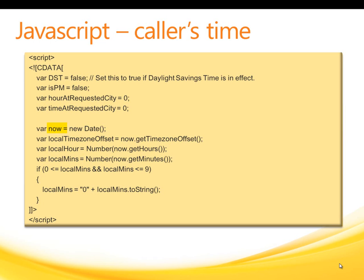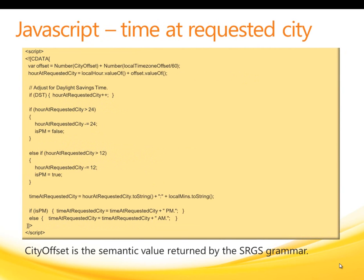The now variable is a date object that contains the date and time on the caller's computer. After the now variable is set, the next several lines of code separate out the local time zone offset, as well as the hour and minutes portion of the time. One thing to keep in mind is that the JavaScript getTimezoneOffset method returns the offset in minutes. The purpose of the second section of JavaScript code is to set a value for the time-at-requested-city variable. The JavaScript code initializes the offset variable with the sum of two numbers: the offset relative to GMT of the requested city and the offset of the local time zone. The city offset variable gets its value from the semantic value returned by the SRGS grammar. The local time zone offset value is in minutes, so to convert to units of hours, it must be divided by 60.